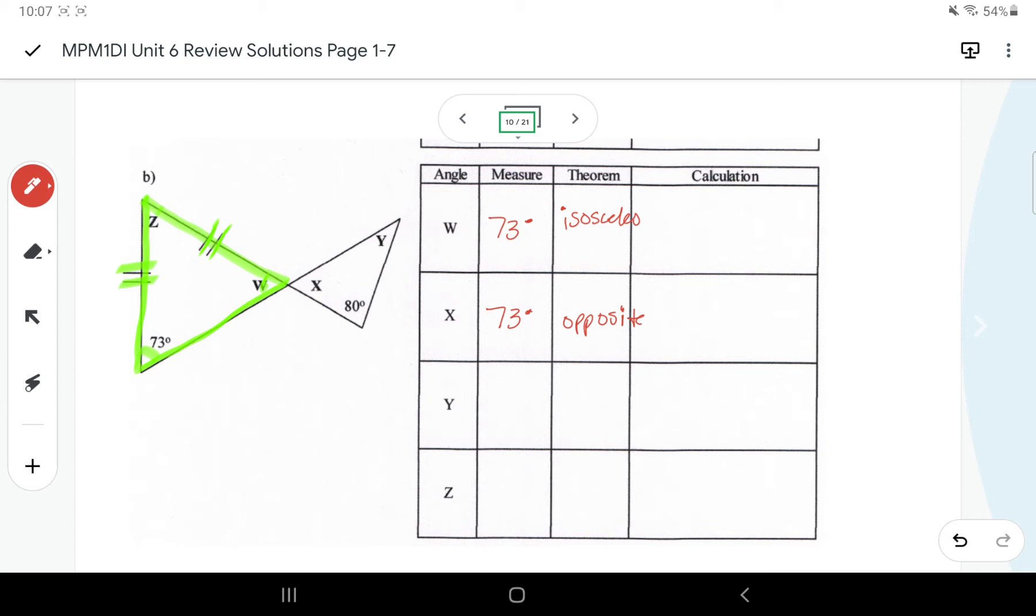And then we can figure out Y and Z using the interior angles in a triangle. So for Y, I'd have 180 minus the 80 degree angle minus the 73 degree angle, so that would give me 27 degrees for Y. And for Z, I do the same thing but I'd have 180 minus 73 minus 73 again because those two bottom angles are the same, so that's 146 that I'm taking away and I would get a 34 degree angle for Z.